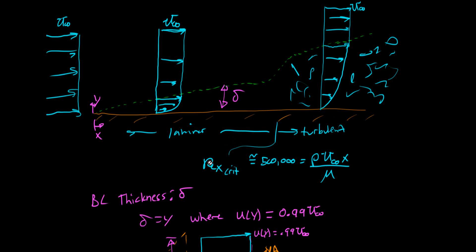So for external flows, we tend to say that the critical Reynolds number is about 500,000. And so when you reach that point, you can assume that it's transitioning or even turbulent. And we calculate it using the distance along the surface rather than some fixed dimension. And so the Reynolds number changes as you move downstream on this plate.